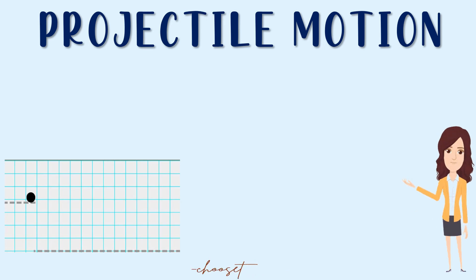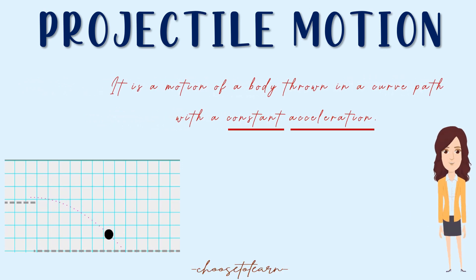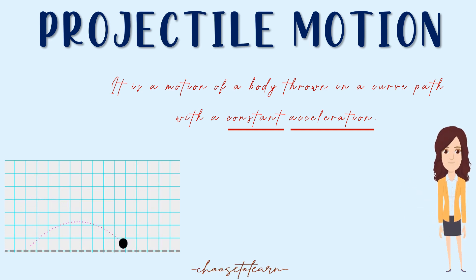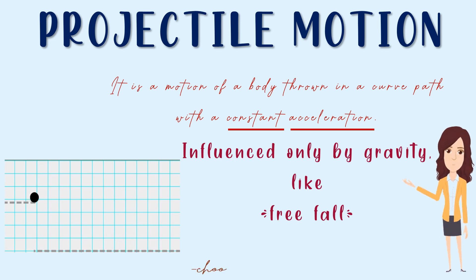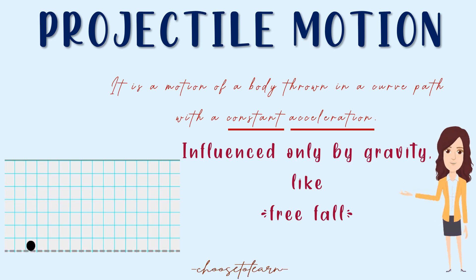Projectile motion is a motion of a body thrown in a curved path with constant acceleration. It is a kind of motion influenced only by gravity, like freefall. That means we are to neglect air resistance.